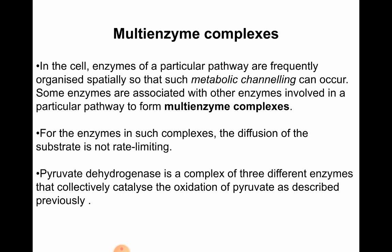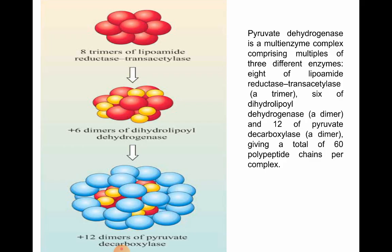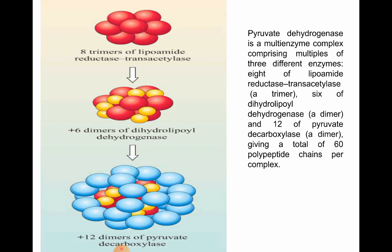Pyruvate dehydrogenase is a classical example to study the multi-enzyme complex. The three different enzymes collectively catalyze the oxidation of pyruvate. Pyruvate dehydrogenase is a multi-enzyme complex comprising multiples of three different enzymes: 8 lipoamide units, 6 dimers of dihydrolipoide dehydrogenase, and 12 dimers of pyruvate decarboxylase, all together giving a total of 60 polypeptide chains per complex.